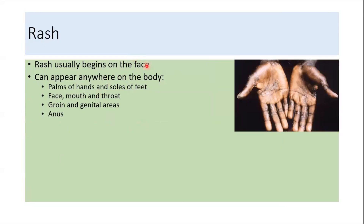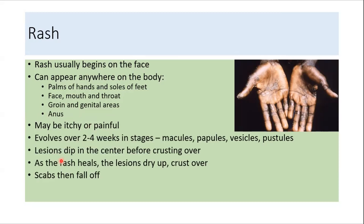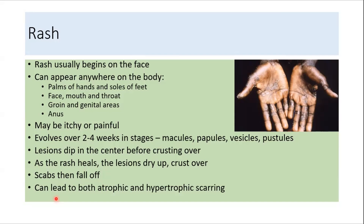Rash usually begins on the face but can occur anywhere on the body, including the palms, soles, face, mouth, throat, groin and genital areas, and anus. The rash can be itchy or painful and usually evolves over 2 to 4 weeks through various stages: from macules to papules, to vesicles, to pustules, then crusting, and finally scar formation. Mpox rash can lead to atrophic and hypertrophic scarring as well.